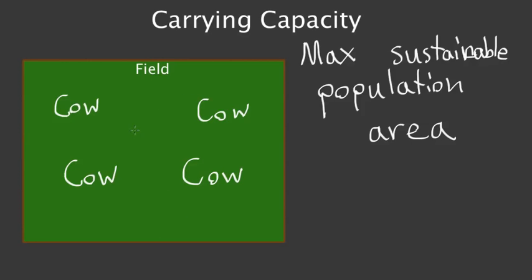But if I add a fifth cow right here in the middle, the field no longer supports all five cows. There just isn't enough food for all five of them. So the carrying capacity of this field would be four cows. Because as soon as you add this fifth cow, the field will no longer support all of the life there.